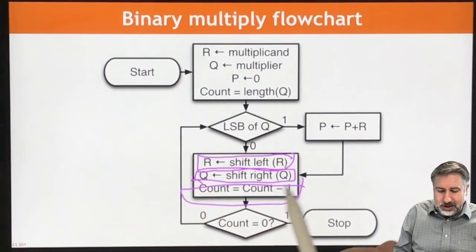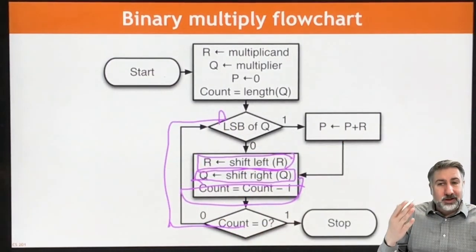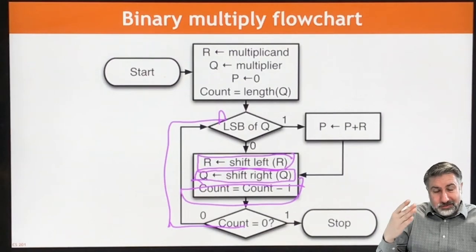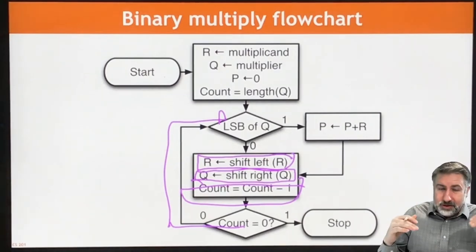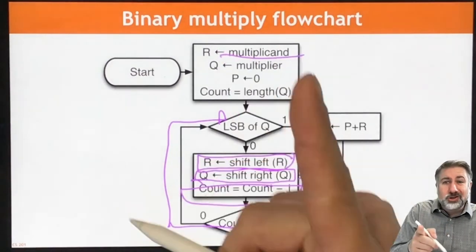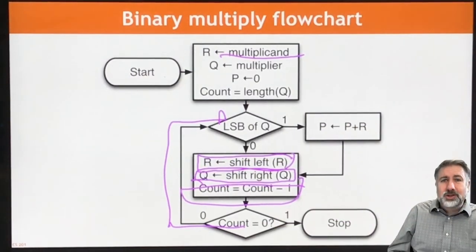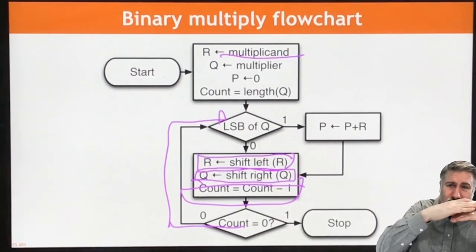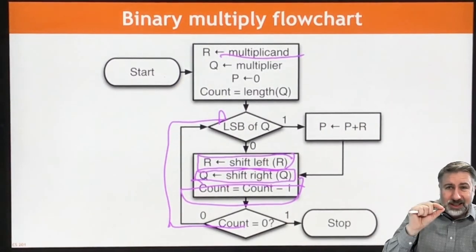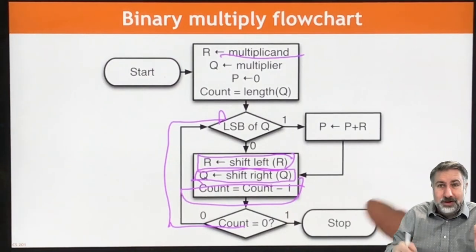We're looking at the multiplier bit by bit. We shift the multiplier to the right to get rid of the bit we just used and look at the next bit. Then we shift the multiplicand to the left so that it's adding into the next slice of the partial product. We decrement the count by one so we know we've done this once. Then we ask: are we done? If not, we go back and do this again — check the LSB, add if it's one, skip if not, shift the multiplier, shift the multiplicand, and carry on.